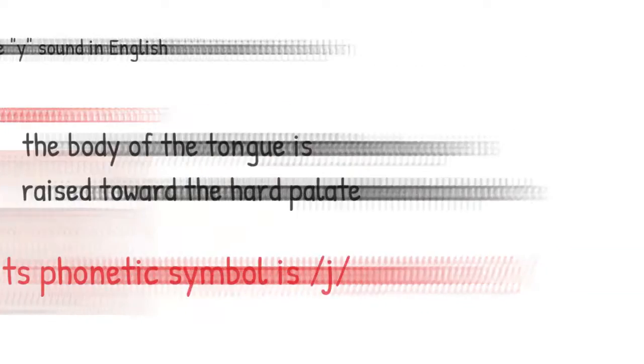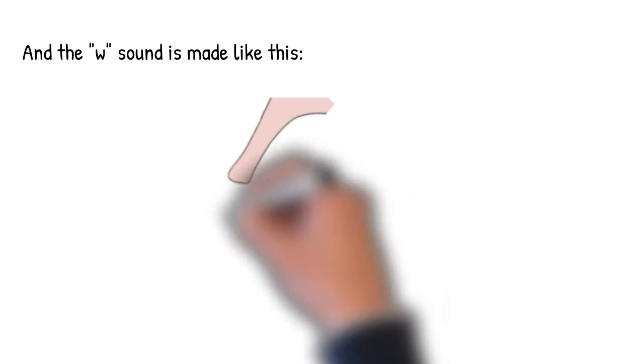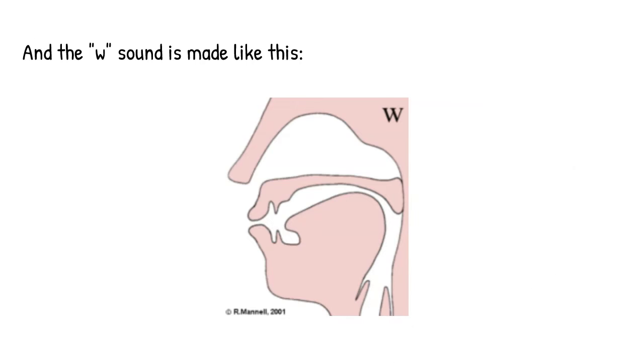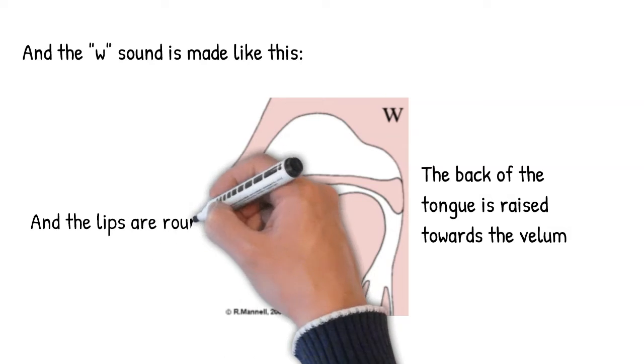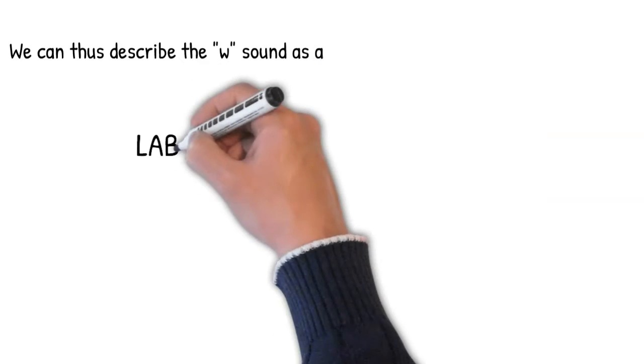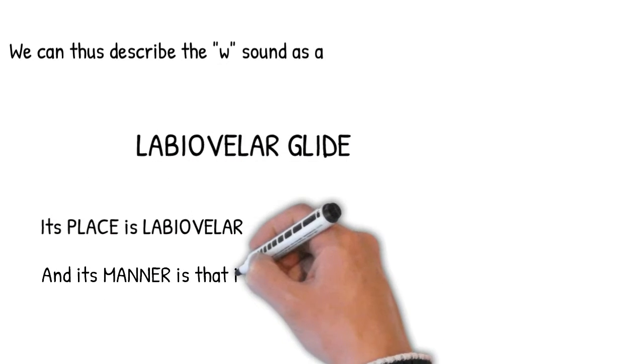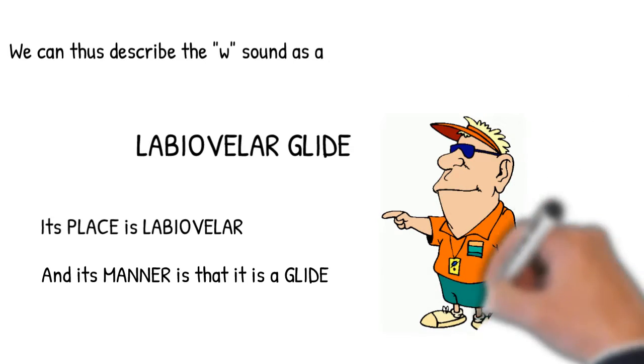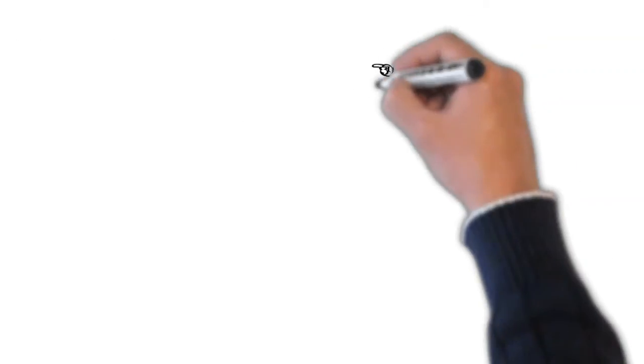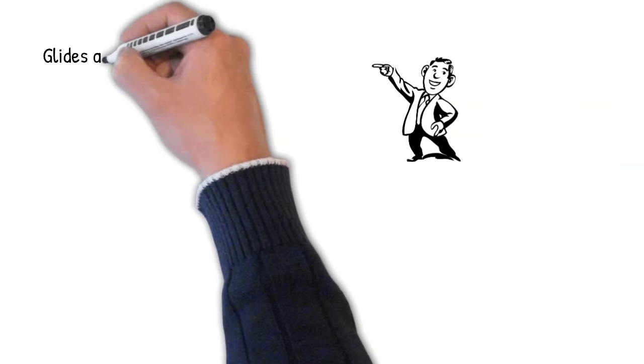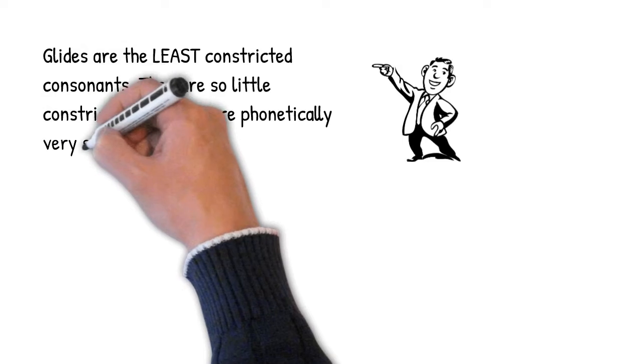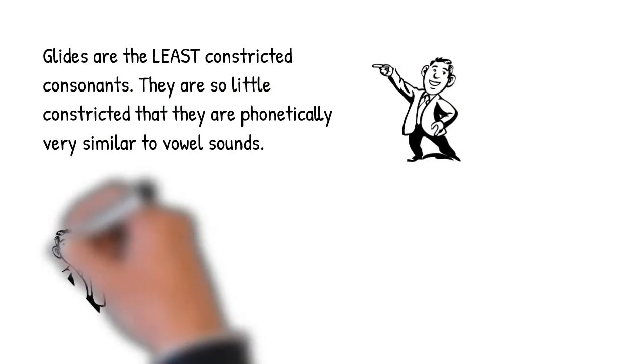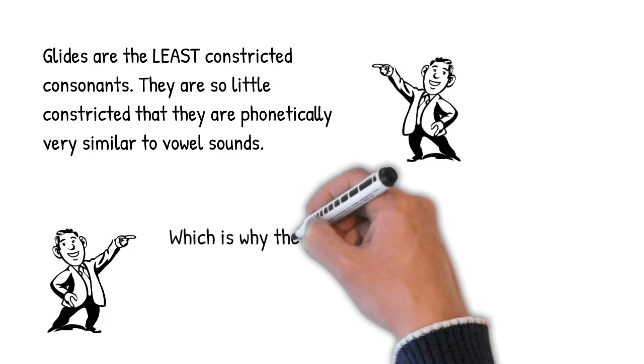Here's how we make the sound that we think of as W. There's two things going on when we make a W. First, the back of the tongue is raised towards the velum. Second, we round our lips. This all means that what W is is a labiovelar glide. Its place is labiovelar and its manner is that it's a glide. So remember one thing about glides. They're the least constricted of all the consonant sounds. In fact, they're made with so little constriction that they're actually called semi-vowels and their articulation is very vowel-like.